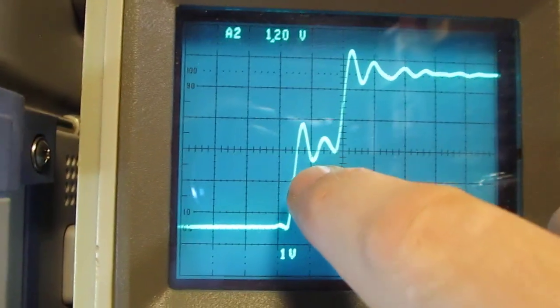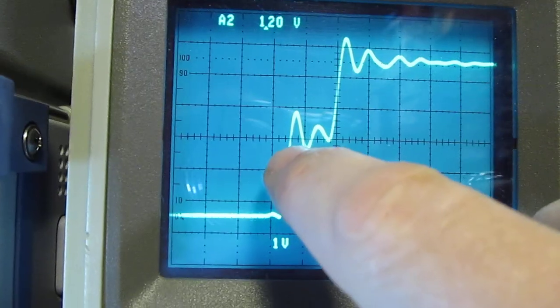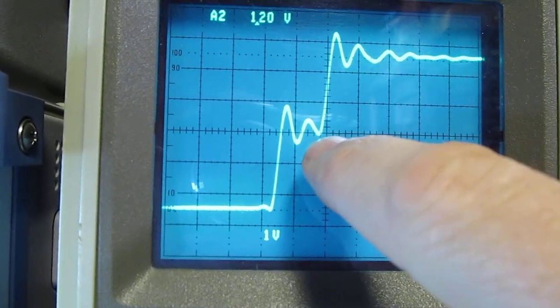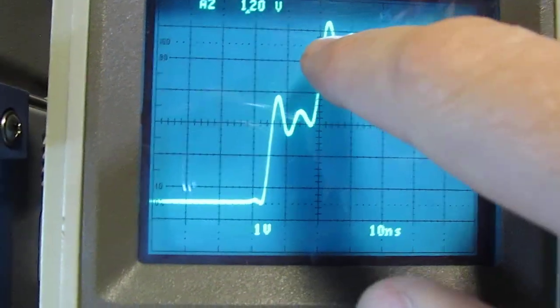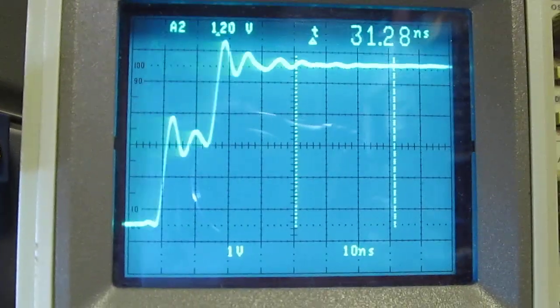When it first sees the 50 ohm coax, that signal is now going down to the end of the coax, reflecting back. When it makes it back to the input, we get the reflection up here. If we simply measure the time delay...